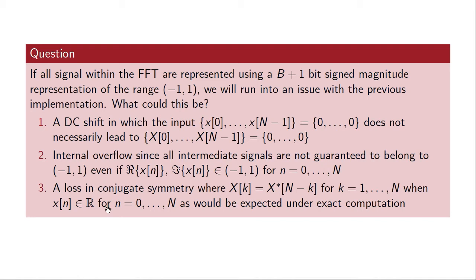Or could it potentially be a loss of conjugate symmetry, where the conjugate symmetry of the DFT would fail to hold in a fixed-point implementation? Well, the answer is option two: you could have internal overflow. Whenever you add two numbers in the range minus one to one, their sum is not necessarily within that range, so you could have internal overflow after the additions in this schematic.